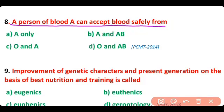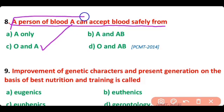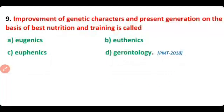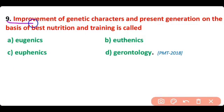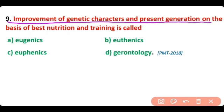Question number 8. A person of blood group A can accept blood safely from O and A. So correct answer is option C. A person of blood group A can accept blood from blood group A and O.